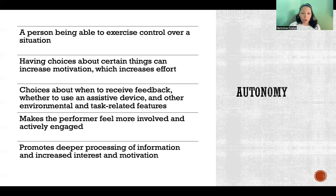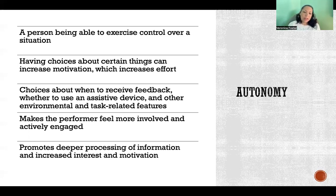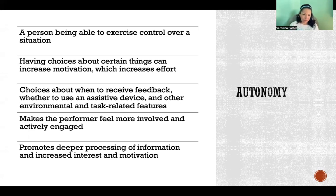Autonomy can mean choices about all sorts of different features in the environment or practice setting — choices about when to receive feedback, whether to use an assistive device like during a balancing task or rehabilitation, like whether they want to use a cane or not. It can be any kind of environmental or task-related feature; it can even be choosing the color of the ball they're going to practice with. Any time you can offer a learner a choice, it's going to help. It makes the performer feel more involved and more actively engaged, which increases motivation and effort, promotes deeper processing of information, and increases interest.